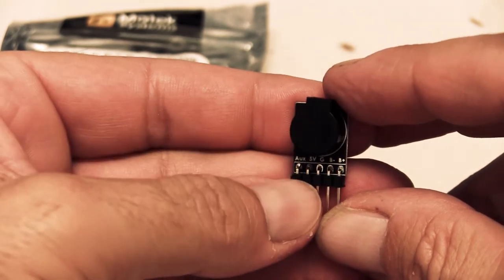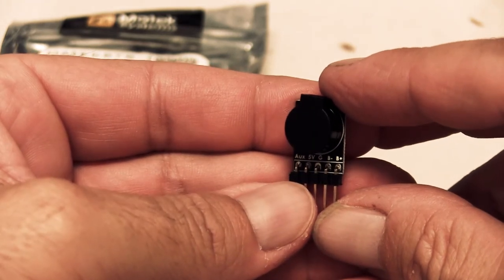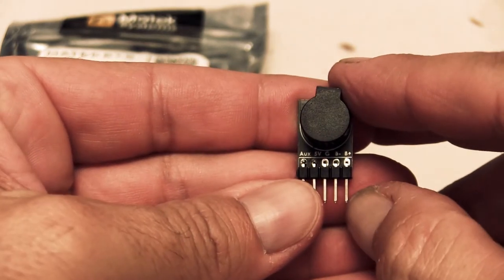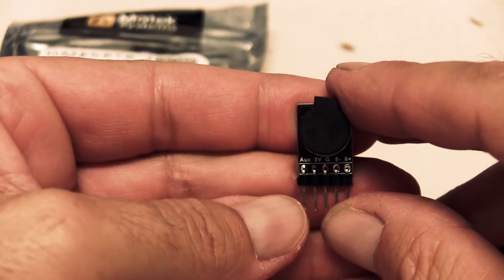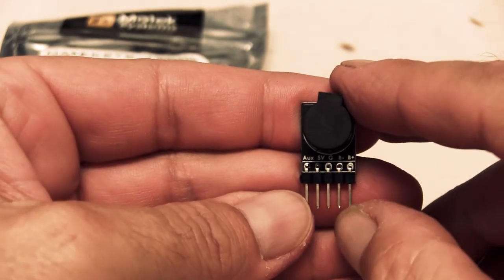So all we're going to be using is the ground, the 5 volt and probably the auxiliary I'd imagine. So we can flick the switch and turn the beeper on if we lose the craft.